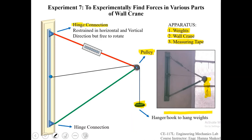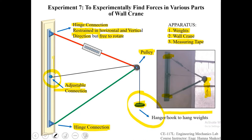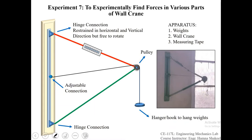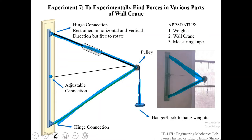Here you have two hinge connections. The characteristic of a hinge connection is that it is restrained in the horizontal and vertical direction — it cannot move horizontally or vertically — but it is free to rotate. Here you also have an adjustable connection, meaning that if you apply a load on the hanger, this connection can move upward or downward and adjust itself according to the applied load. The green line and red line represent the two members of the crane. The string attached at the hanger is passed over the pulley and connected to the adjustable connection.